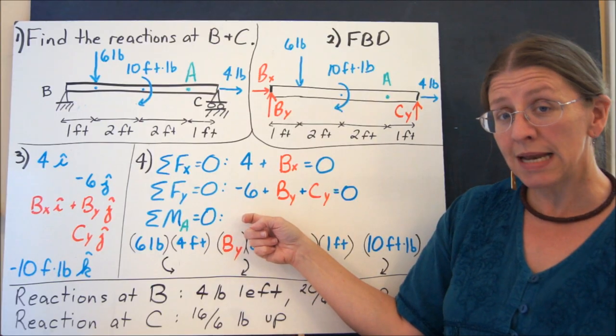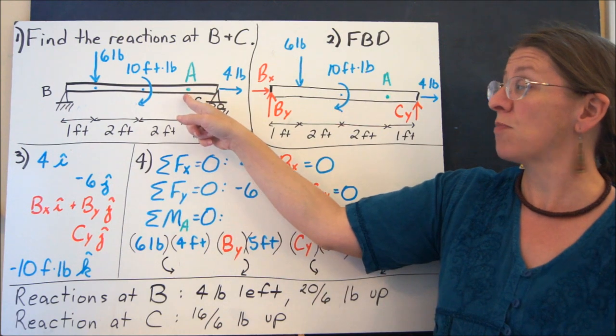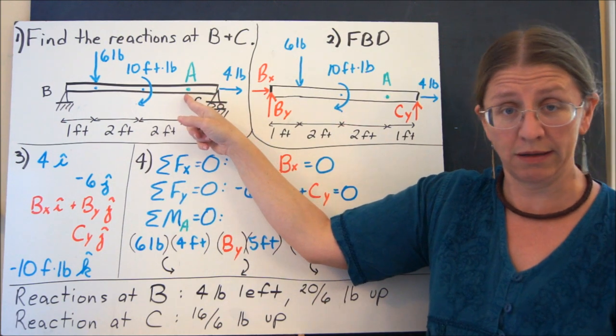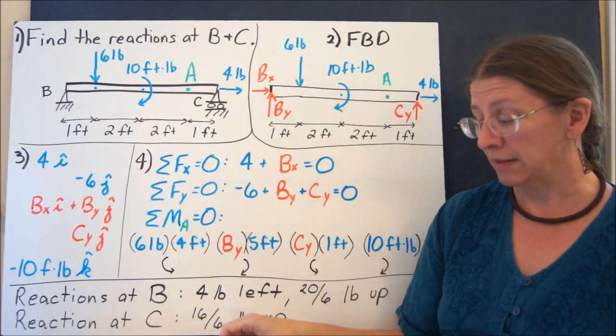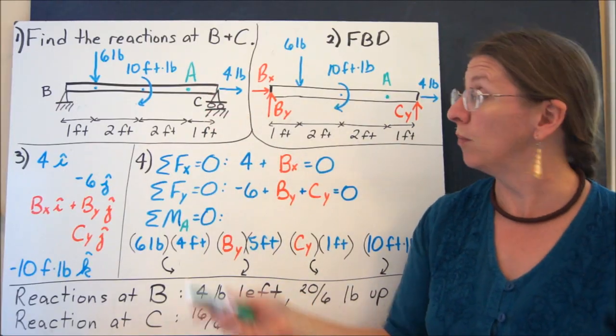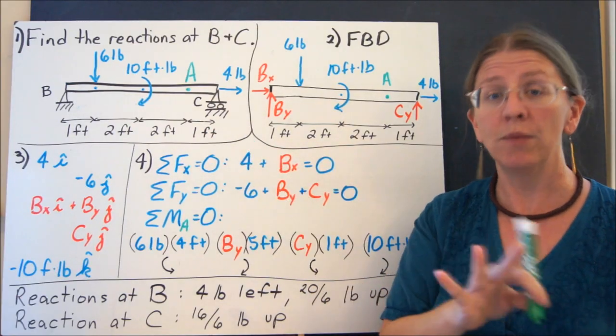My sum of the forces in X and Y is approximately the same as it always was. My sum of the moments at A is a little different. First of all, I had to pick A. A is given to me in this problem only because I drew it there already. You get to pick. So I picked this one kind of at random. You might pick a different one. You might pick summing the moments at B or summing the moments at C. It really doesn't matter.